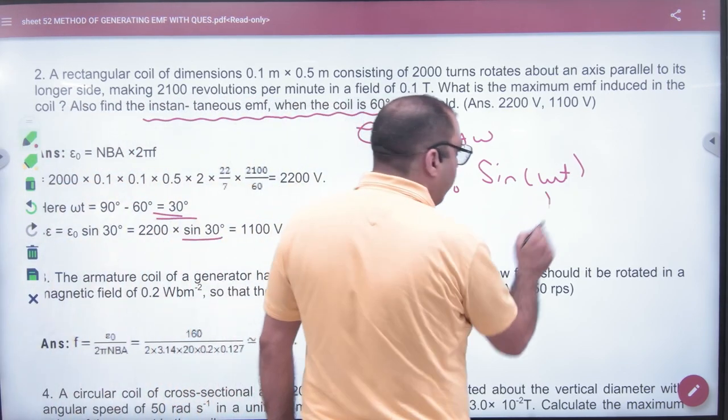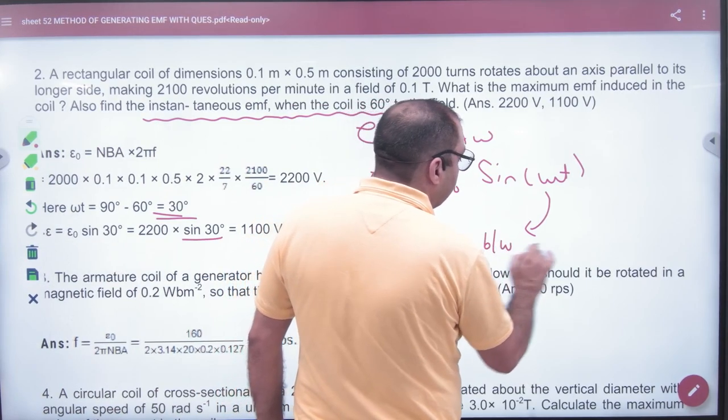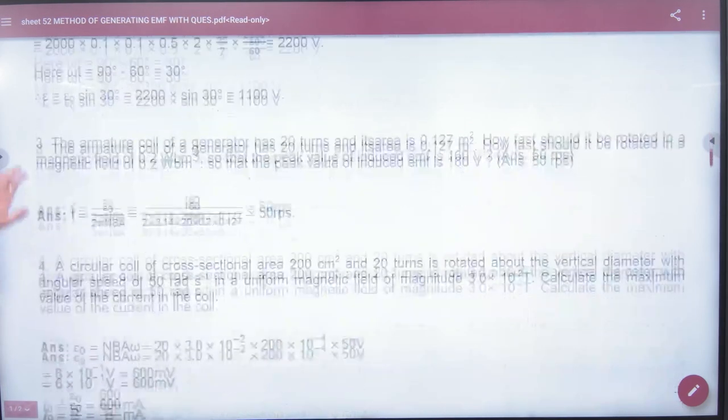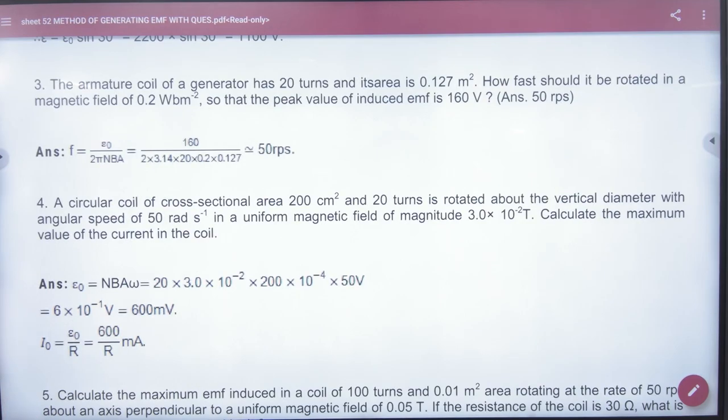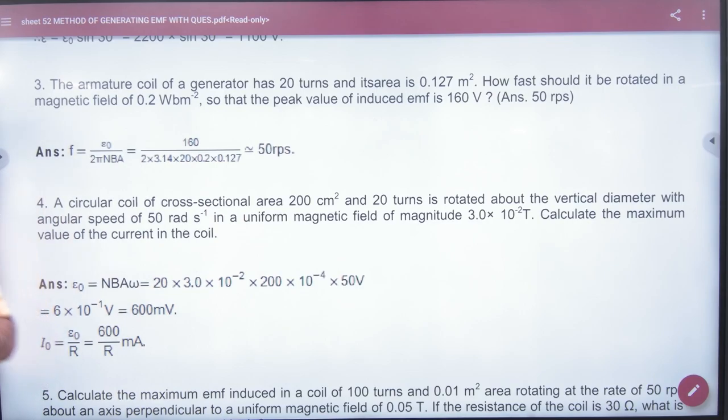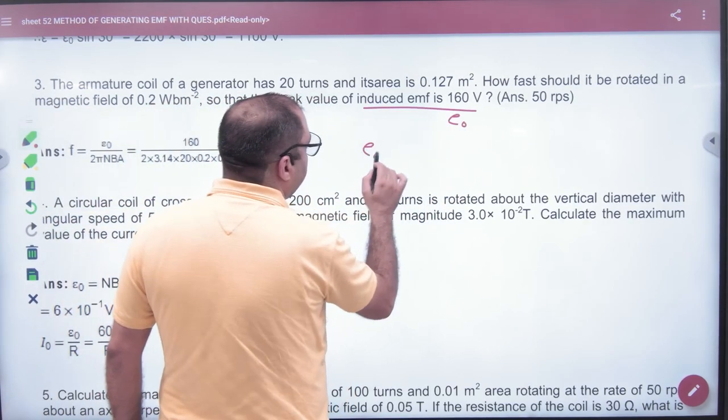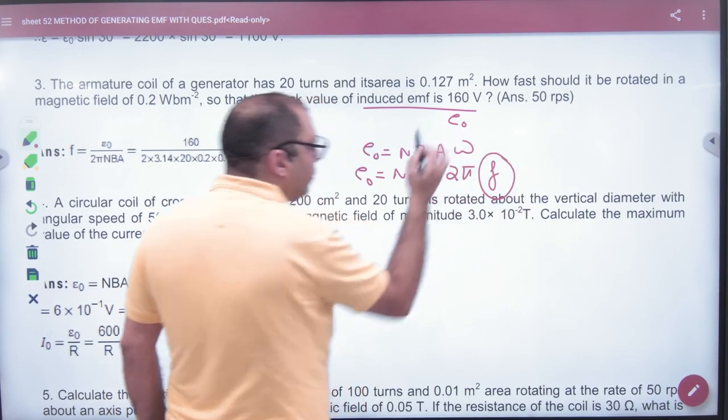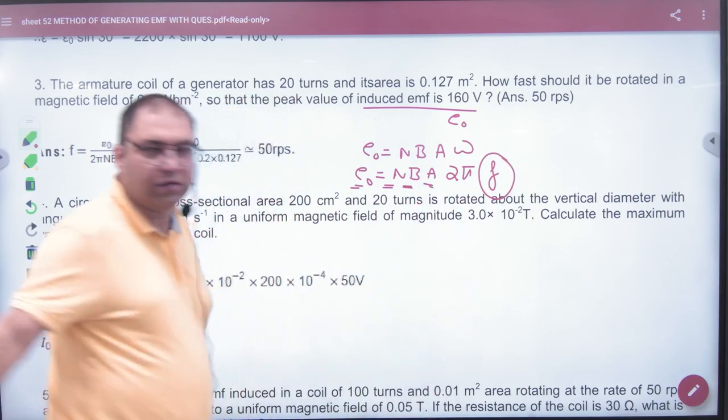e₀ sin omega t is the angle between B vector and area vector. Given peak value of EMF 160. Peak value e₀ = NBA omega. NBA omega, 2π into frequency. So e₀ = NBA, solve, frequency can be calculated.